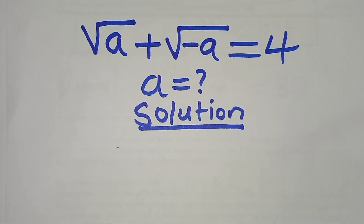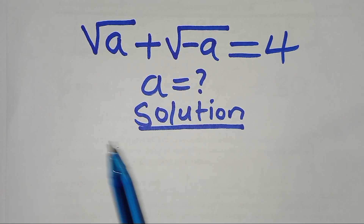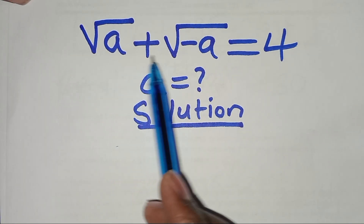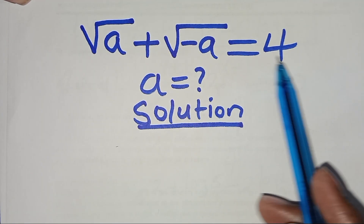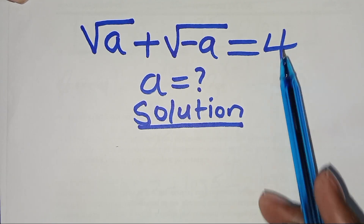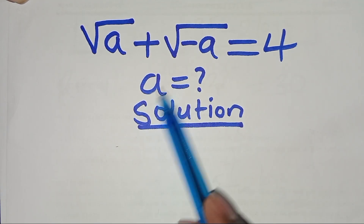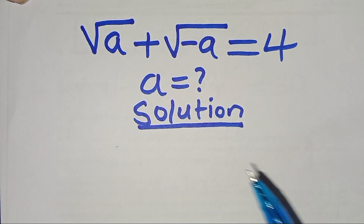Hello everyone, welcome. Today we solve this square root radical problem: the square root of a plus the square root of negative a equals 4. What is the value of a?